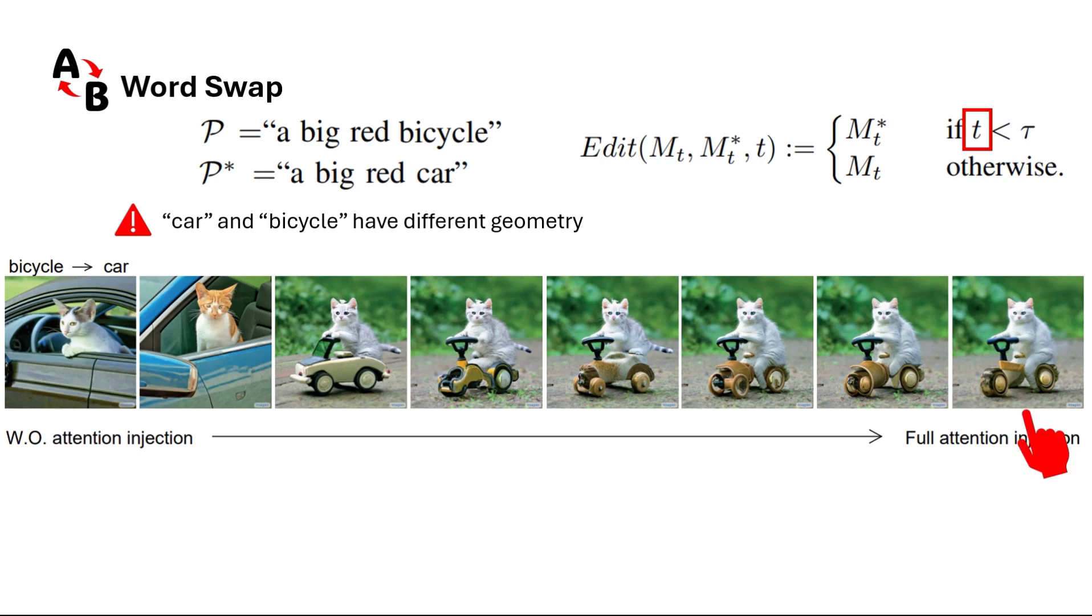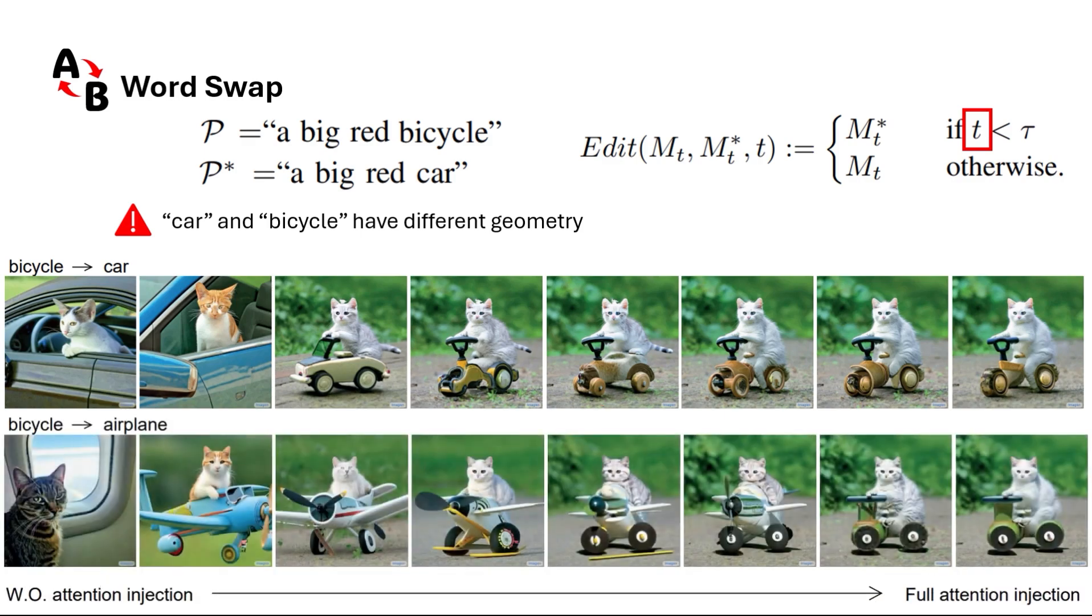On the other hand, when we fully replace the attention maps, the generated image is very much similar to the case where the cat was riding a bicycle, in a way that the car doesn't look like a car much. But when we go somewhere in the middle, it becomes more like a car but at the cost of adding more variations.